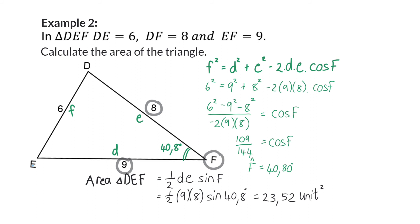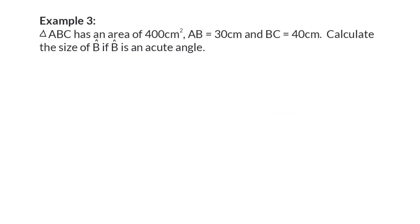Next we'll have a look at an example where the area of the triangle is given and one of the dimensions of the triangle is our unknown. Example 3: Triangle ABC has an area of 400 centimeters squared. AB is 30 centimeters and BC 40 centimeters. Calculate the size of B if B is an acute angle.